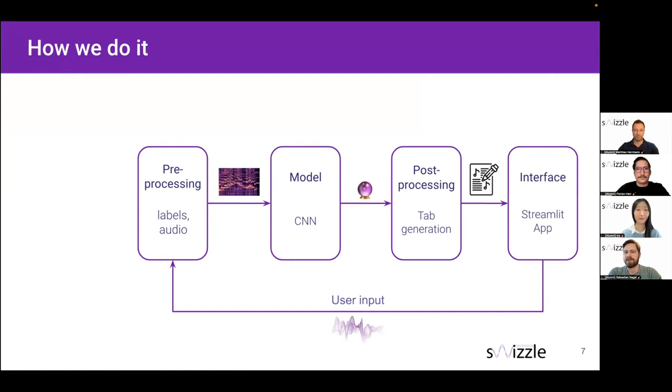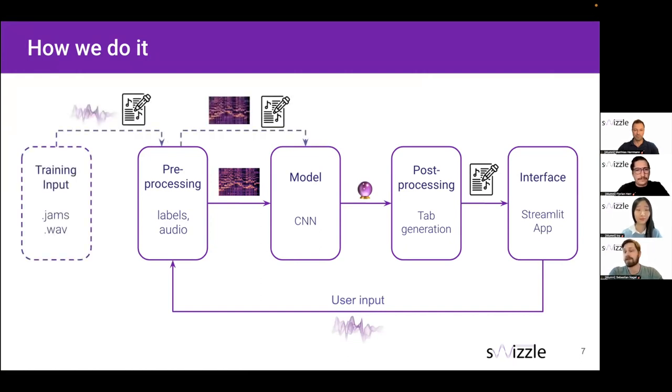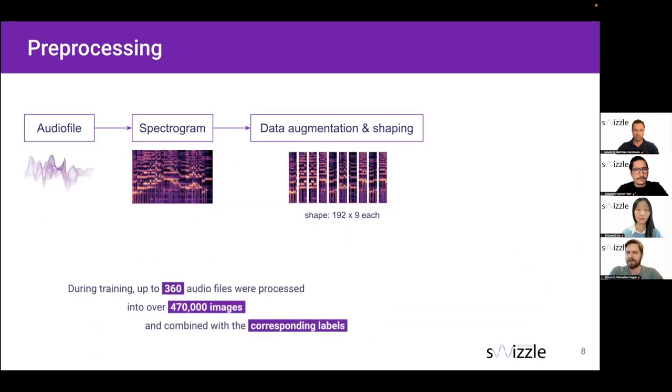Now, when generating training data, we can use the same pipeline. However, the only difference is then that the training data or the data set that Flo also presented earlier is, of course, also containing the annotation files. But our pre-processing can also handle that, putting together the correct audio files with the correct labels. So let's actually talk about this first step, the pre-processing, a little bit more.